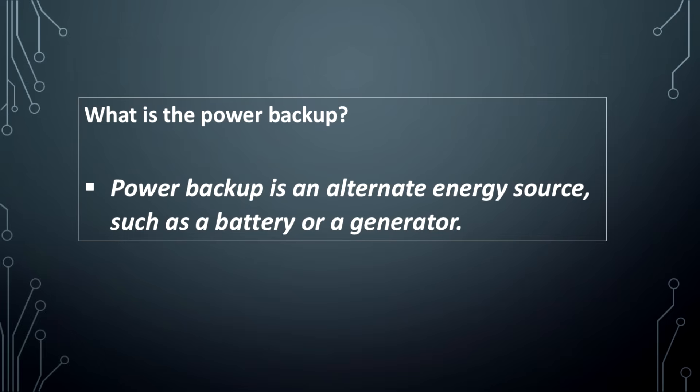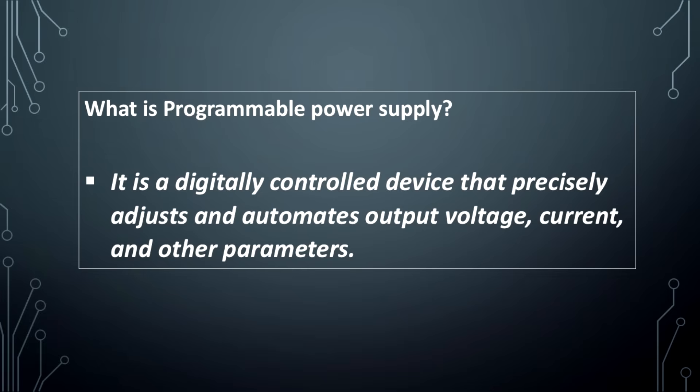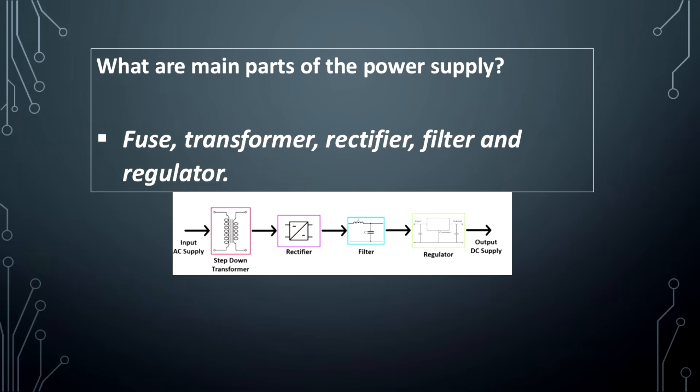What is power backup? Power backup is an alternate energy source, such as a battery or a generator. What is programmable power supply? It is a digitally controlled device that precisely adjusts and automates output voltage, current, and other parameters.